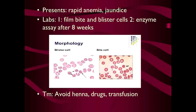Practically, G6PD deficiency hemolytic anemia is found when a patient comes with fever and you offer sulfonamides like Septrin, or an anti-malarial drug, and the patient develops hemolytic anemia. The patient presents with rapid anemia and jaundice. On CBC there are bite cells and blister cells in the peripheral film, but enzyme assay is only reliable after eight weeks. Treatment: avoid henna and the precipitating drugs; transfusion helps because it is a rapidly developing anemia.